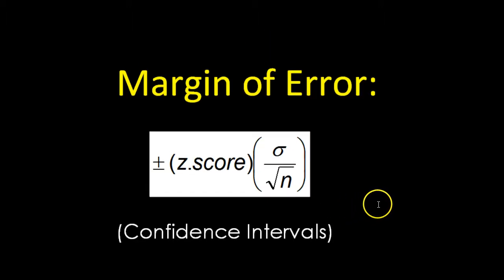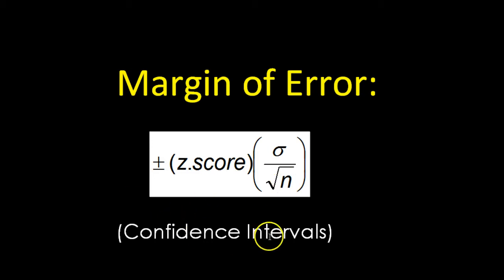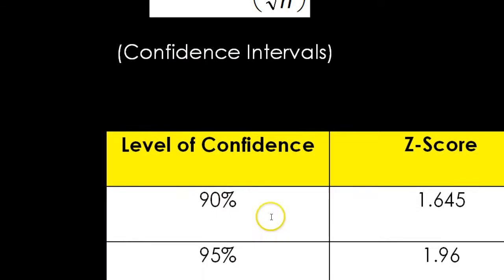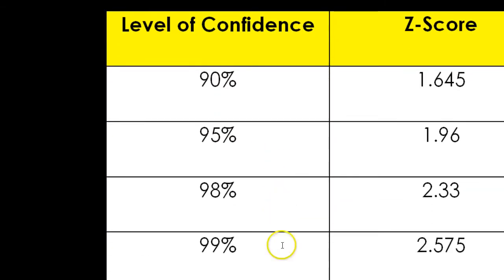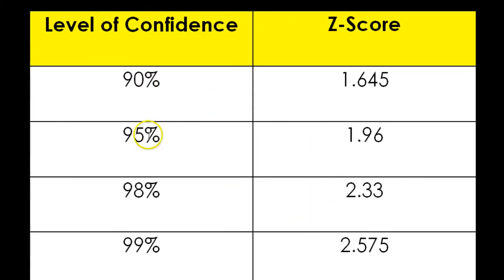But sometimes we need a more powerful, beefy margin of error formula. It looks like this: z-score times the standard deviation divided by the square root of the sample size. This is the one we're going to use when we need a specific level of confidence. The z-score determines what level of confidence we have — so if I want to be 95% sure that the true answer is in my interval, I'm going to use this z-score.